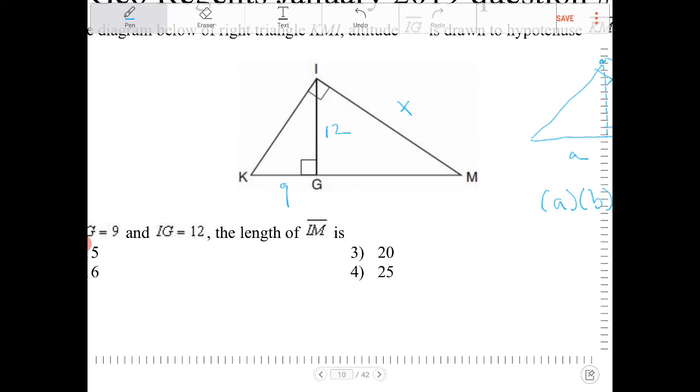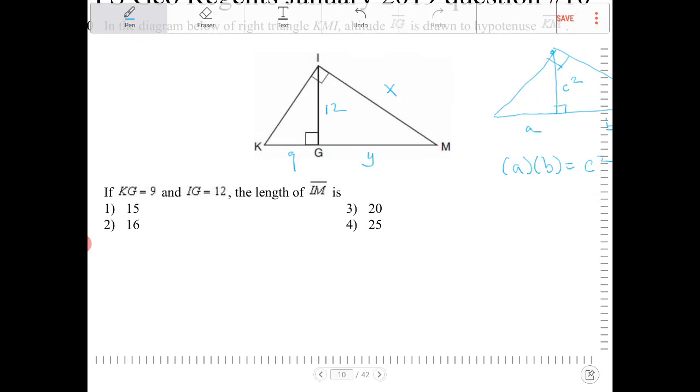Well, it looks like we can first figure out what this GM is. I'm going to call that Y. We can first figure out what Y is, and then after we figure out what Y is, then we can figure out what X is. So actually, this is a two-part problem.